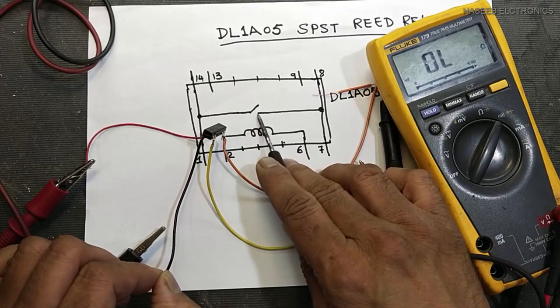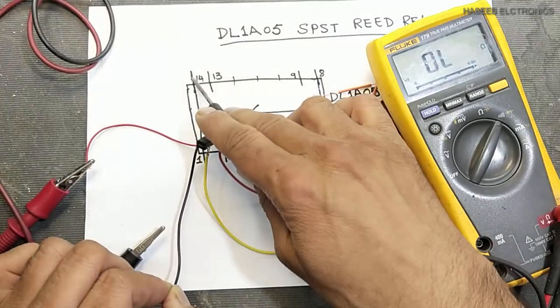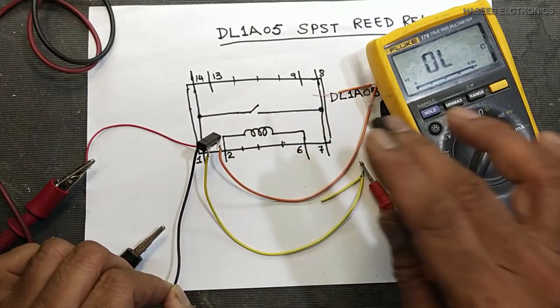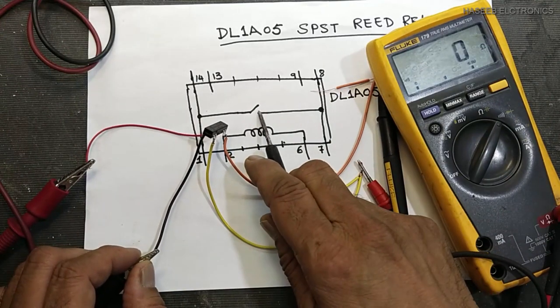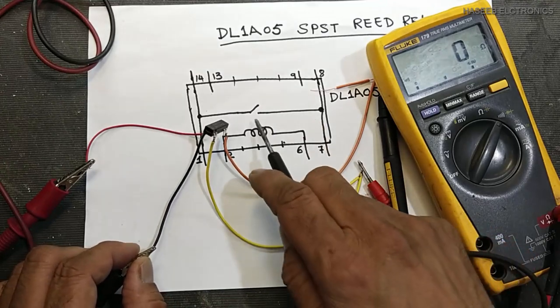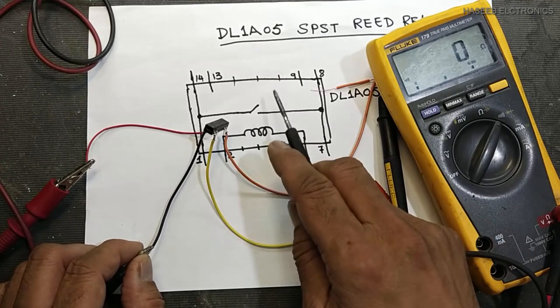When it is permanently closed, it will cause the signal to switch directly. Sometimes we apply voltage and it remains open. Why? Because these contacts are damaged or burned out.